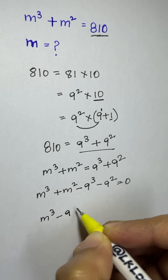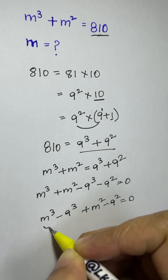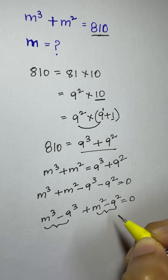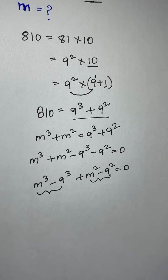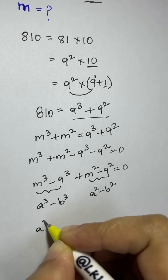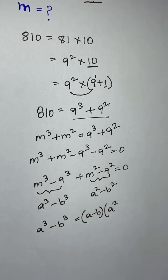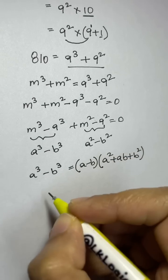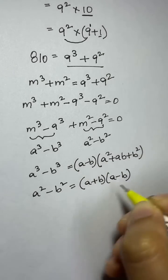Let's split this up as (m cubed minus 9 cubed) plus (m squared minus 9 squared) equals zero. There are identities here: a cubed minus b cubed equals (a minus b)(a squared plus ab plus b squared), and a squared minus b squared is the difference of squares identity: (a plus b)(a minus b).